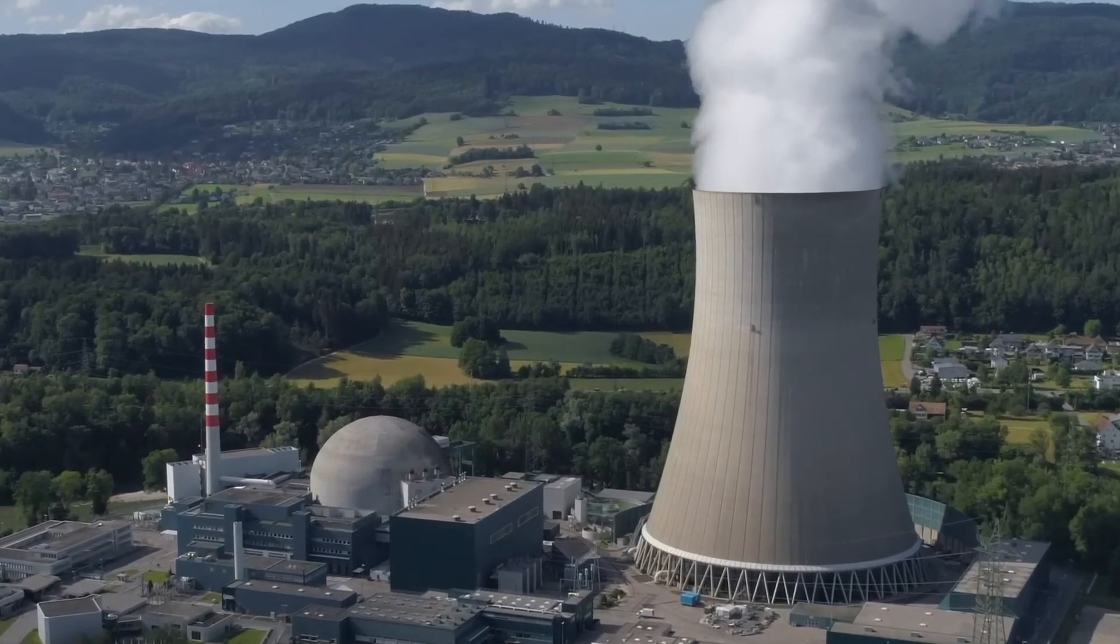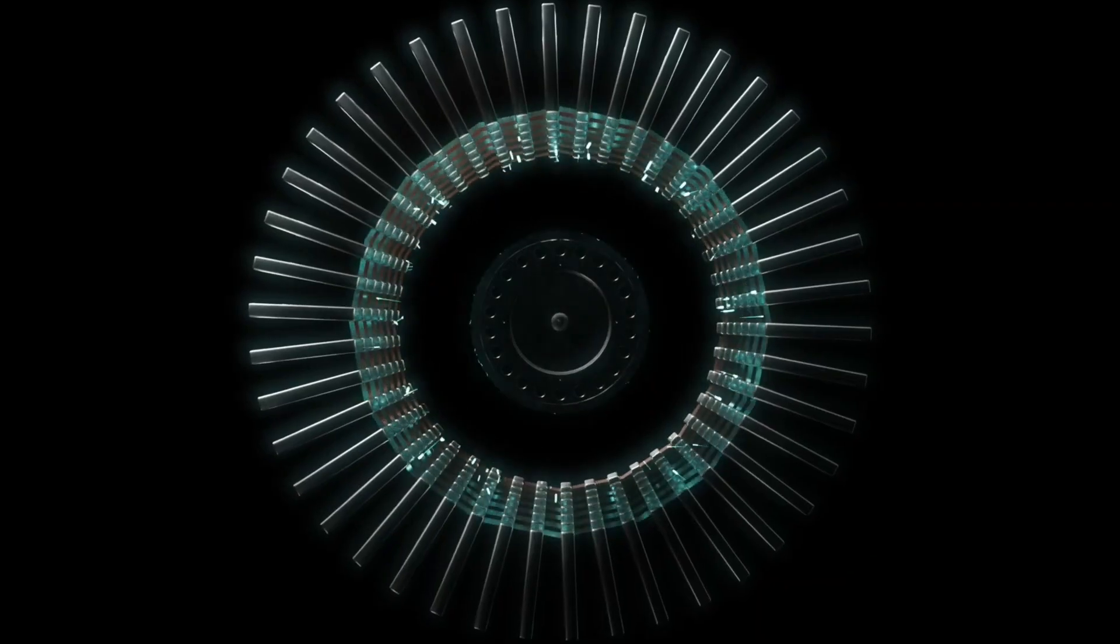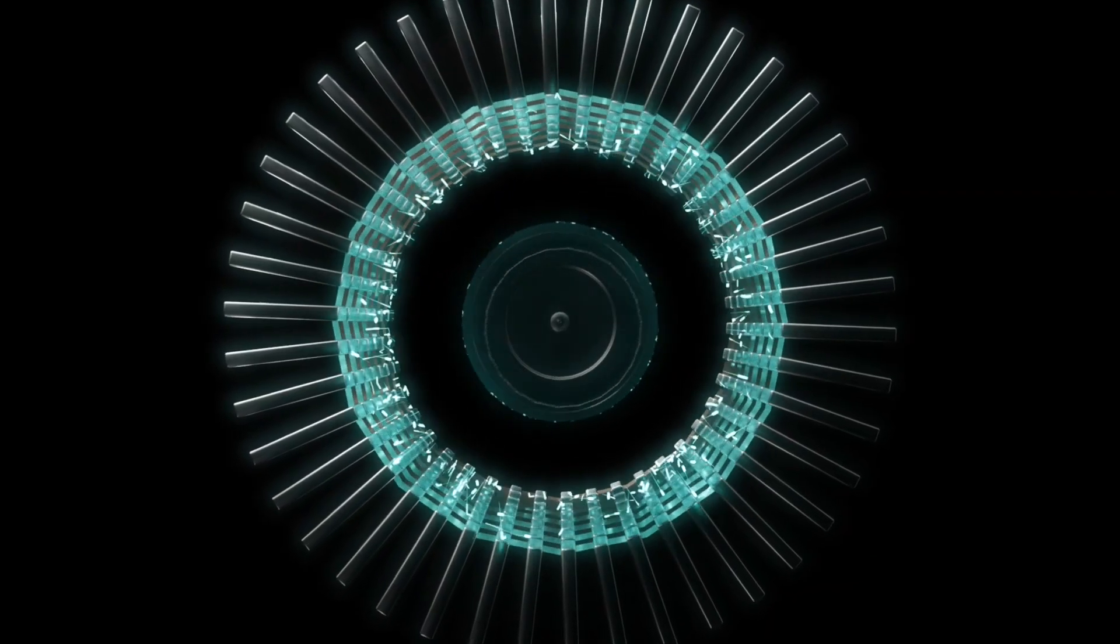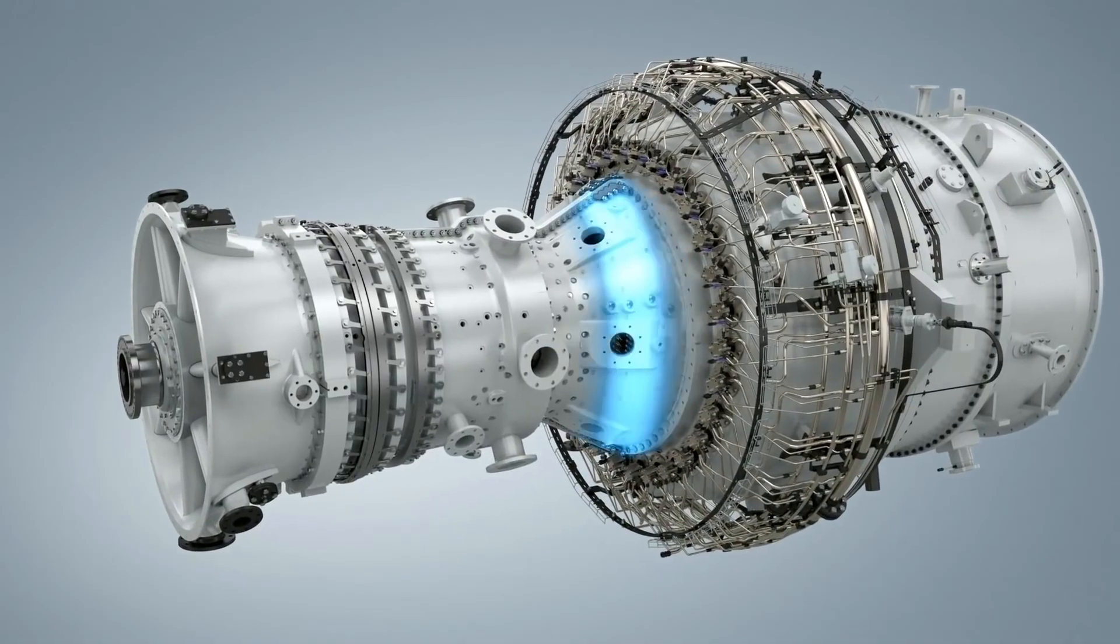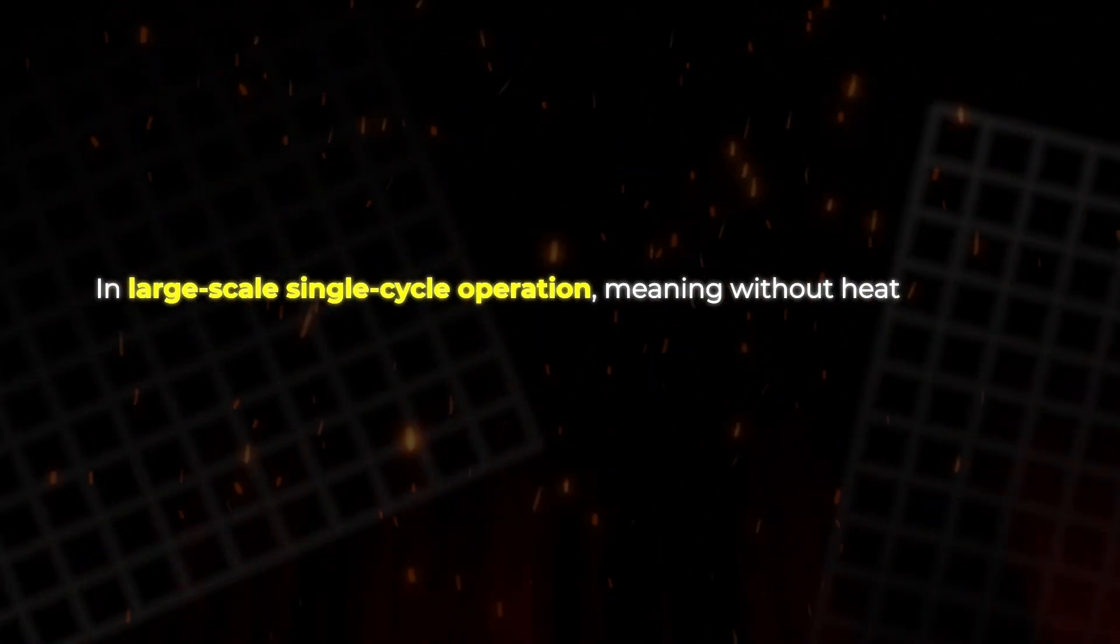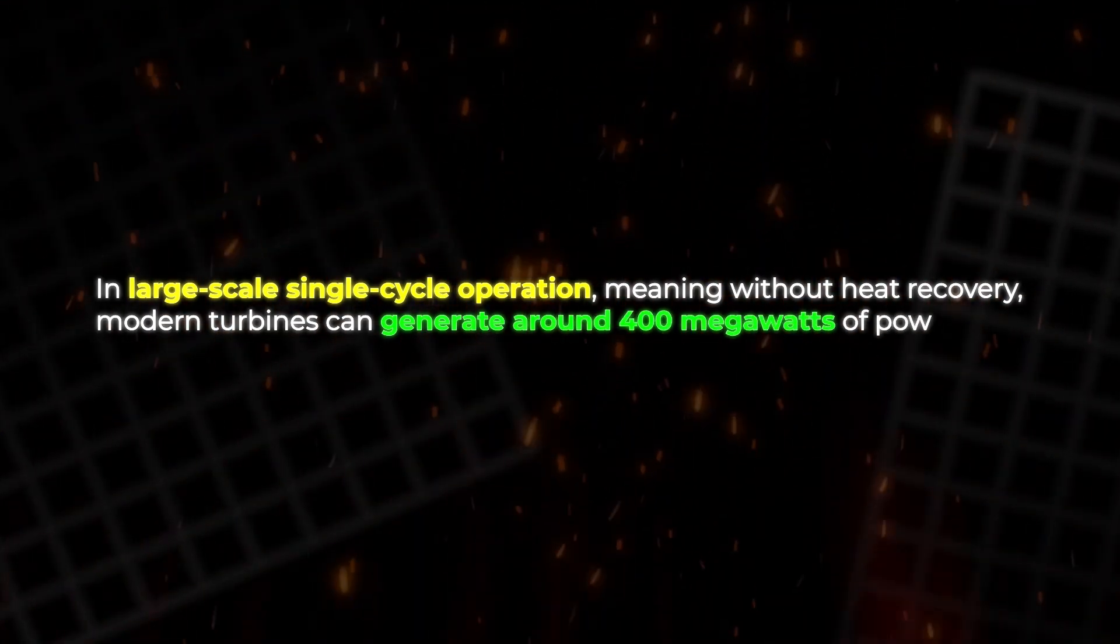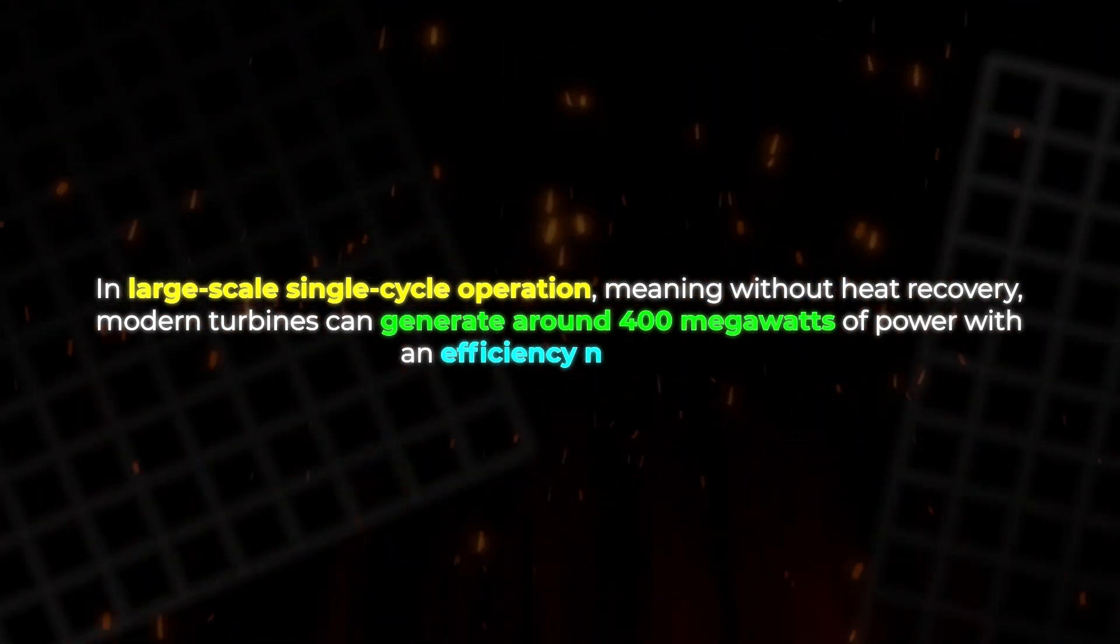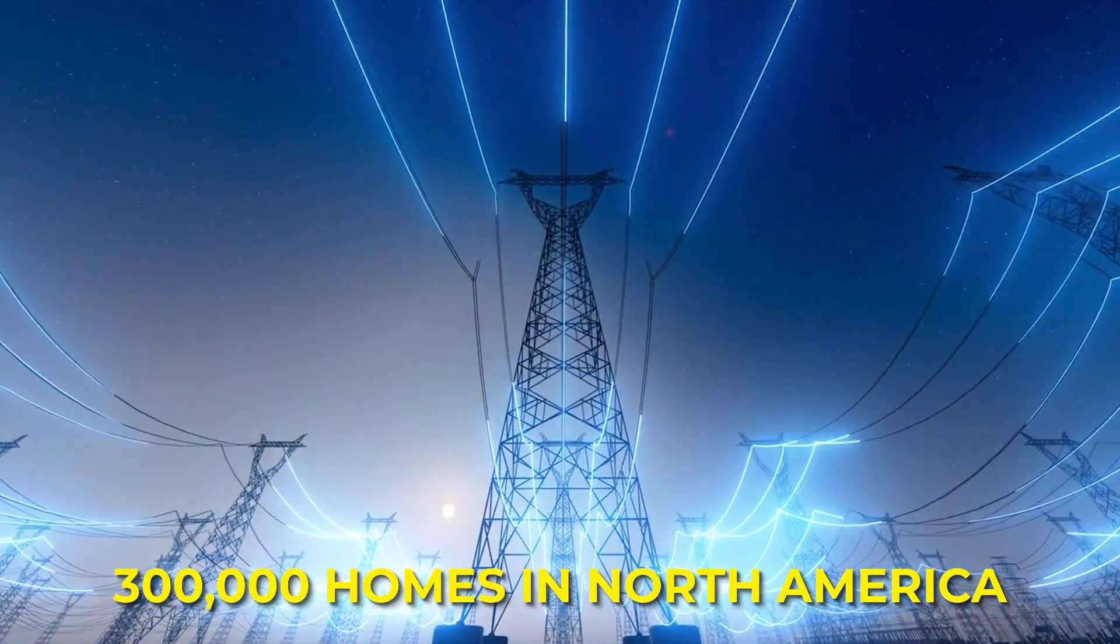Among fossil fuels, natural gas stands out for its high energy density. Aside from hydrogen, it contains more energy per unit of mass than almost any other commonly available fuel. That's one reason gas turbines are so powerful and efficient. In large-scale single-cycle operation, meaning without heat recovery, modern turbines can generate around 400 megawatts of power with an efficiency near 40%. That's enough to supply electricity for roughly 300,000 average homes in North America.